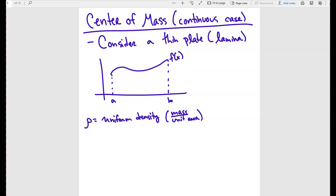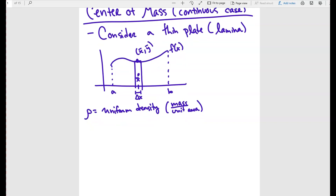We're going to try to figure out where exactly the center of mass is, because there are going to be some points that are a little bit more dense than others. Similar to what you do with integration, we divide this into many different rectangles. A particular rectangle corresponds to a center x-bar. The width of that thin slice is delta x, and the center of the slice is at x-bar comma y-bar.